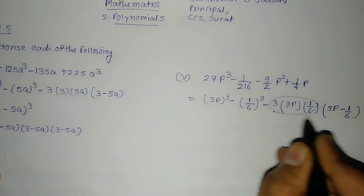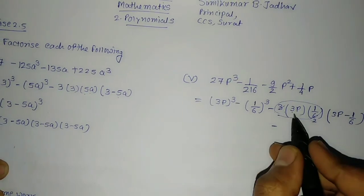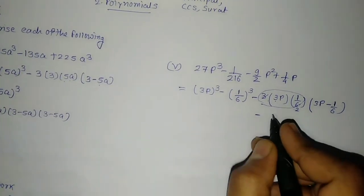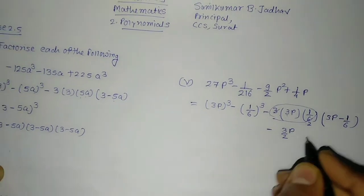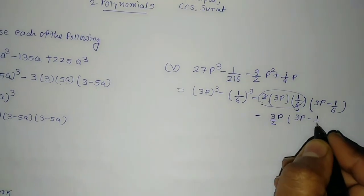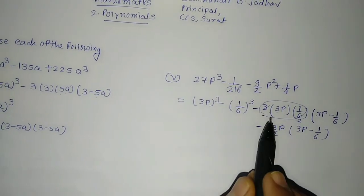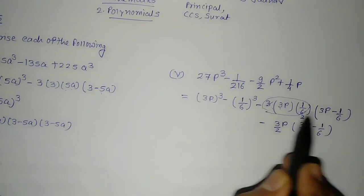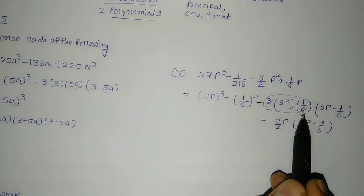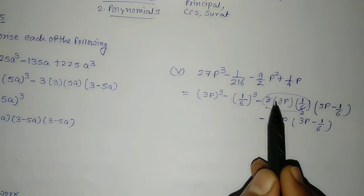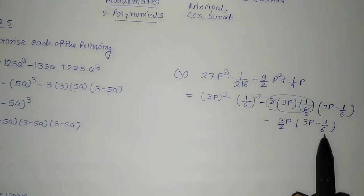I think you are getting confused somewhere, so I will show the expanded form first, then we will go to this, otherwise you will get confused. For this I will write the simplified form. You can see we can cut it: 3 twos are 6, so this 3 will cut. What is remaining? This term will be as usual — here it will remain 3 into p as it is, and this is 2 as 3 cuts, so 3 by 2. And this bracket is 3p minus 1 upon 6.